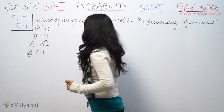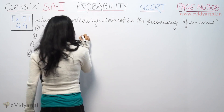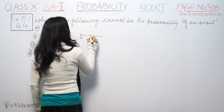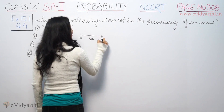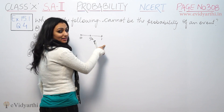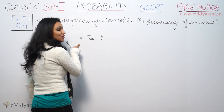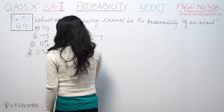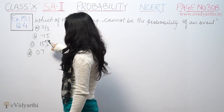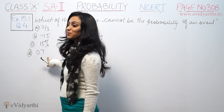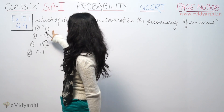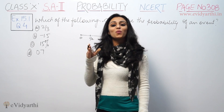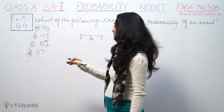The probability of an event is 0 to 1. Negative numbers are not valid. This number is negative and the rest are positive. When you have 2 by 3, you have something like 0.6666.